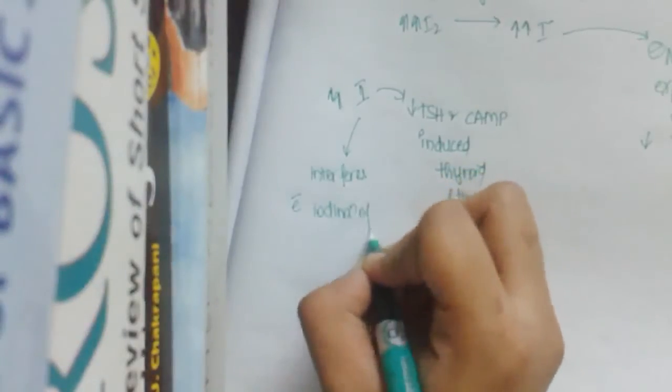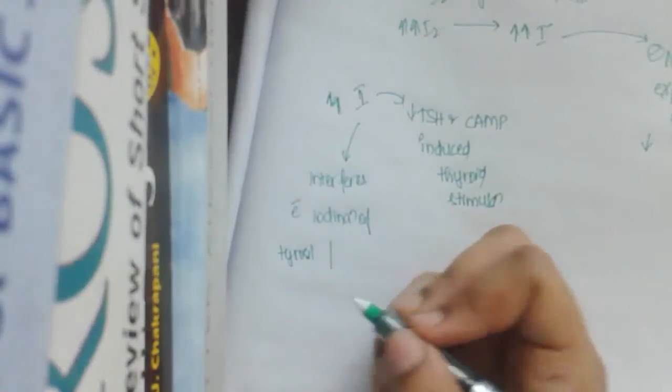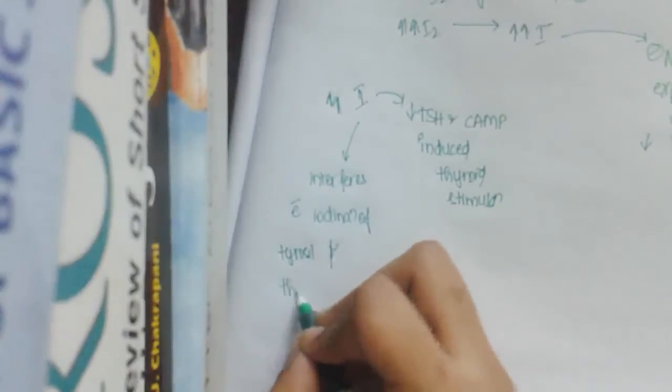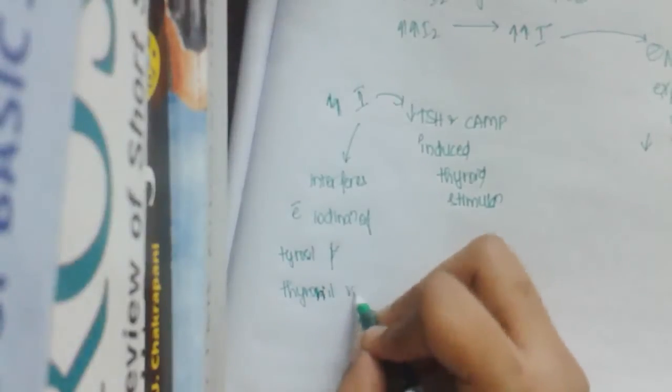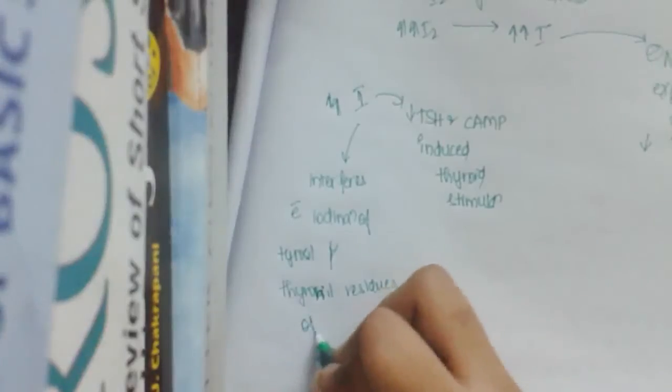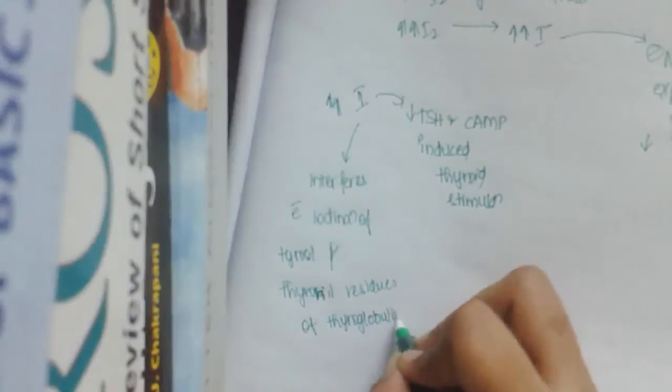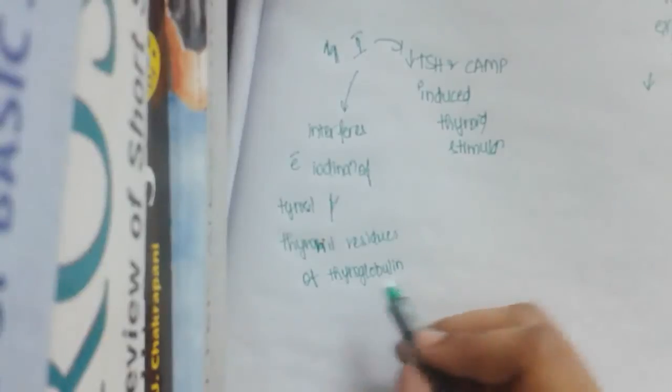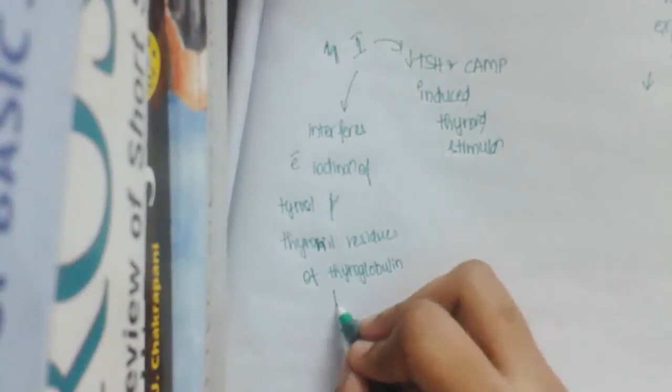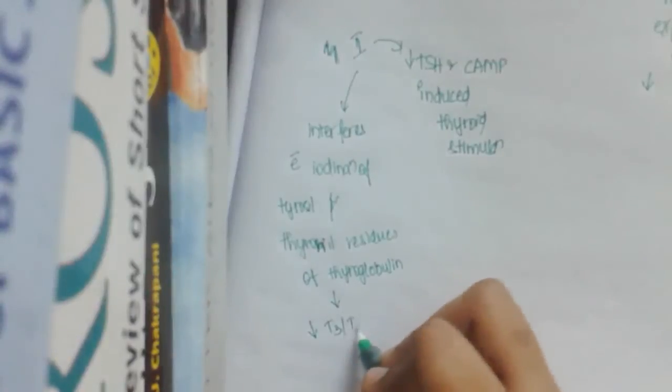It interferes with iodination of tyrosine and tyrosine residues of thyroglobulin, thus decreasing T3 or T4 synthesis.